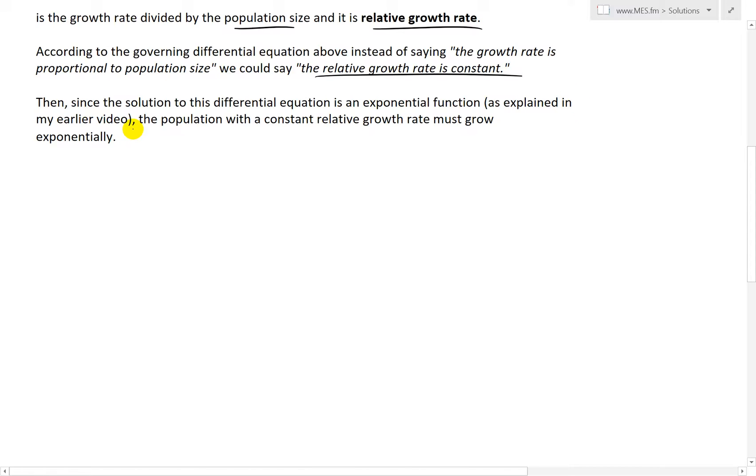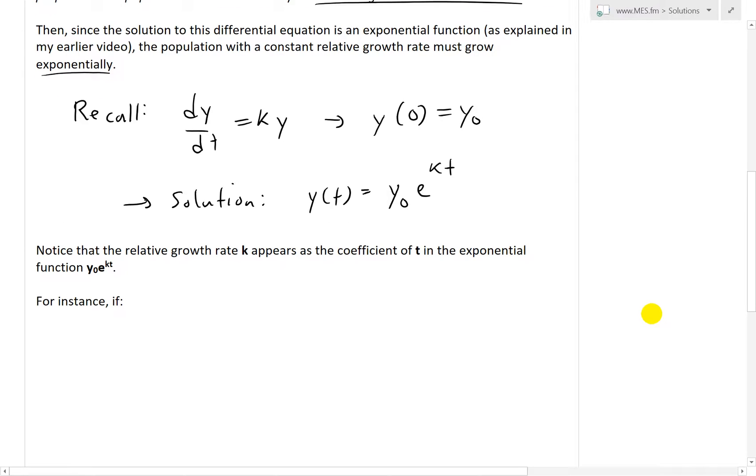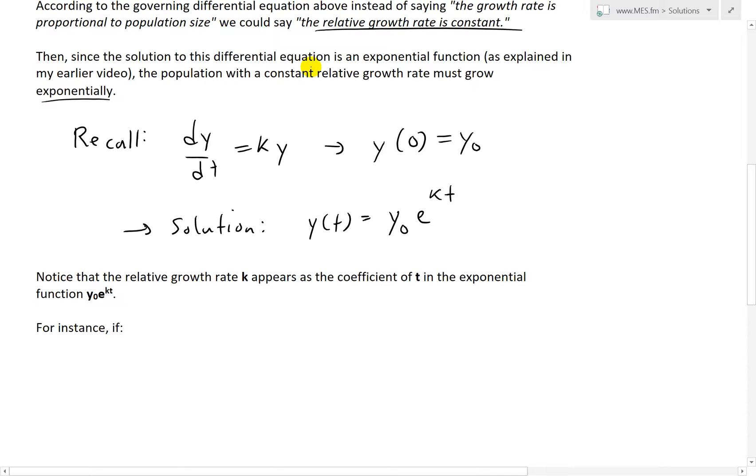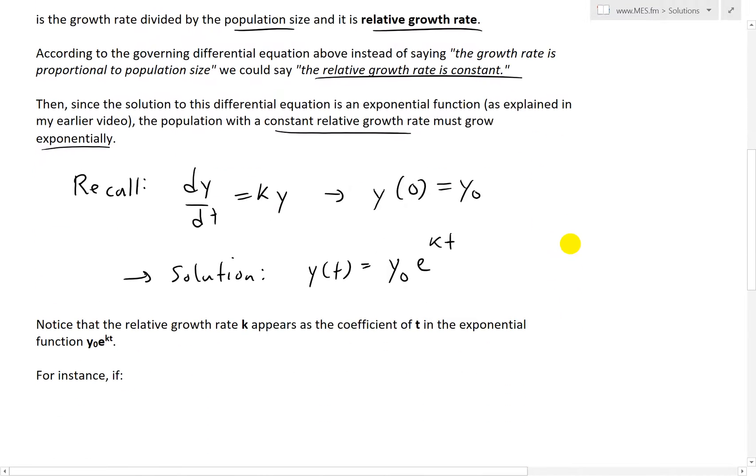the population with a constant relative growth rate must grow exponentially. Recall my earlier video, if you had dy/dt equals ky, and then given the initial value y(0) equals y₀, then the solution to this differential equation is y(t) equals y₀ times e to the kt. So that's just a recap of my earlier video. It shows that this solution is exponential, so the population must be growing exponentially.